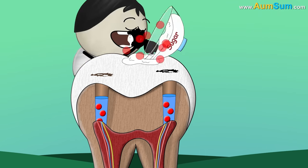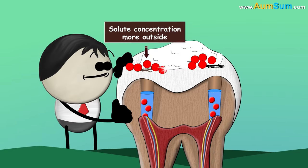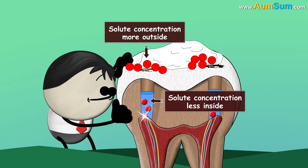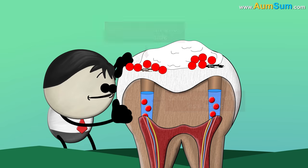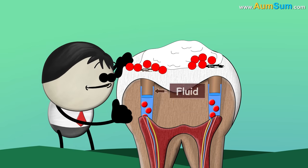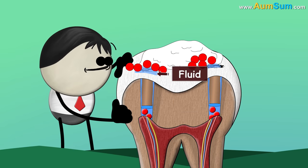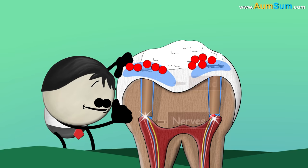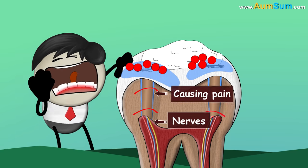On consuming sugar, the solute concentration outside dentin becomes more than the solute concentration inside the tubules. Hence, the fluid from tubules rushes out via osmosis, stimulating the nerves below and causing pain.